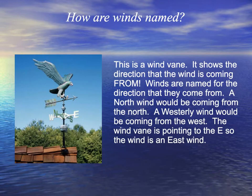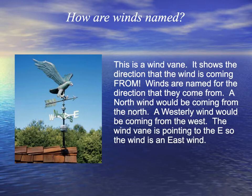Here's something we see on top of buildings sometimes — it's called a wind vane. It shows the direction that the wind is coming from. Winds are named for the direction that they come from. A north wind would be coming from the north. A westerly wind would be coming from the west. This wind is pointing to the east, so this wind is an east wind.